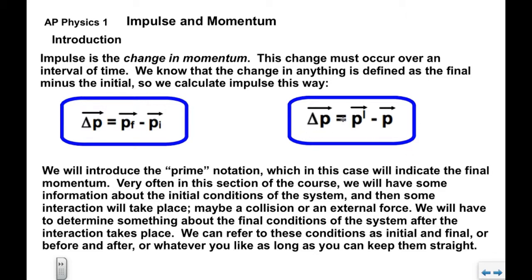Now, in our notation, the delta P, the impulse equals P prime, which is the final value minus P, which is the initial value.